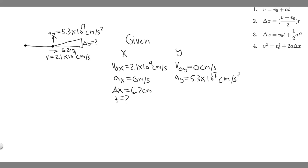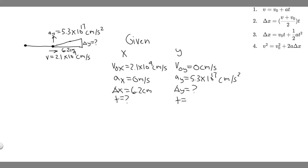For the y direction, we know v sub 0y and a sub y. What we're trying to find is delta y. The kinematic variables are v sub 0, a, delta y, t, and v final y. We won't know v final y, but we will be able to find the time from the x direction and then use it here.